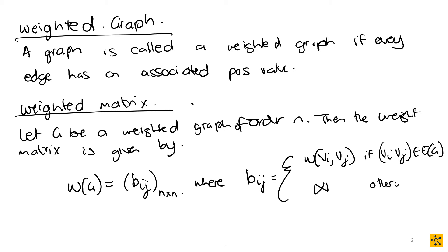Otherwise, the entry is infinity. We do it this way so we can find things like minimum spanning paths. If no edge exists between you and some person — not even through social media — you give it infinity, because when traveling pathways you would not choose an infinite distance. Infinity essentially handicaps that connection, keeping it there in the matrix but making it so you would never actually utilize it.